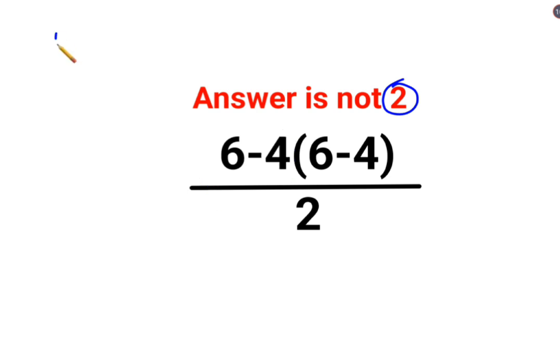We will follow the rules of BODMAS or PEMDAS. In both cases, the first preference is given to parenthesis or the brackets. So we will keep 6-4 as it is. Since there is no sign between 4 and the bracket, that means it is multiplication, and then we have to do this bracket, which is 6-4, which is 2 upon 2.